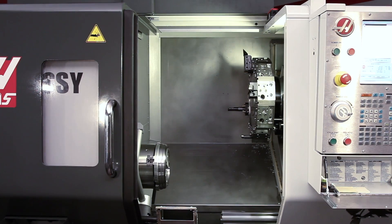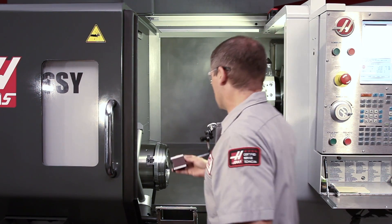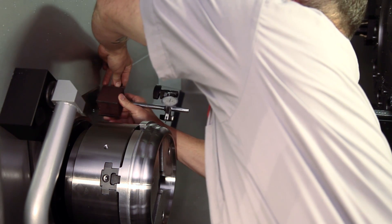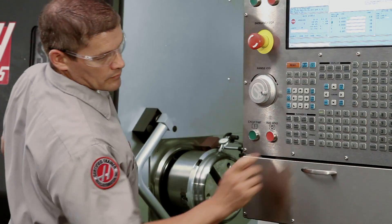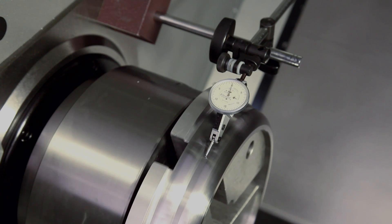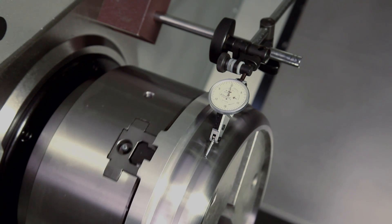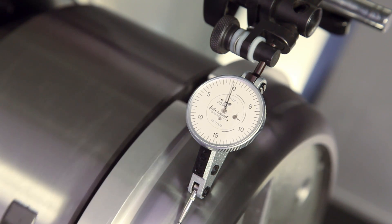To demonstrate how uniformly the pie jaws grip the part, Andrew mounts an indicator to check how much run-out we have with our part gripped in these jaws. At 250 psi clamp pressure, our part's total indicated run-out using the pie jaws is 5 ten-thousandths.